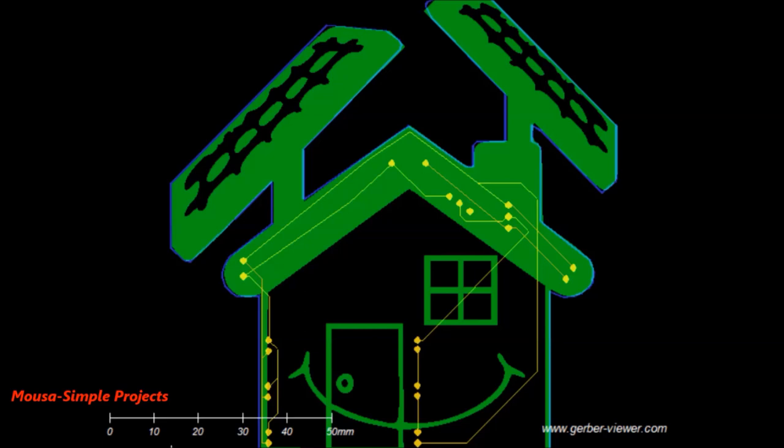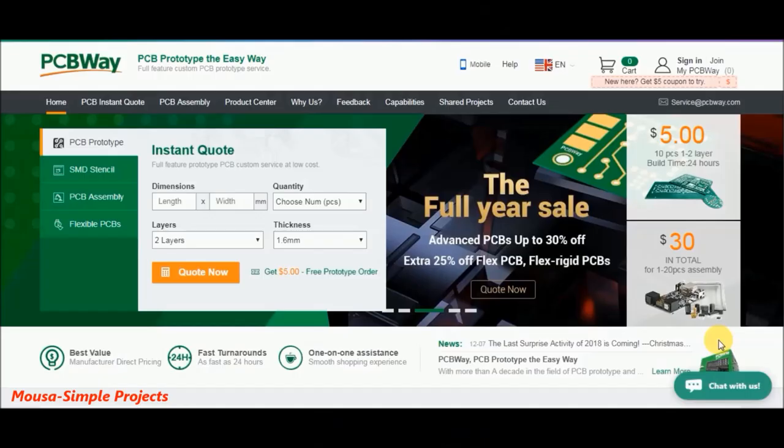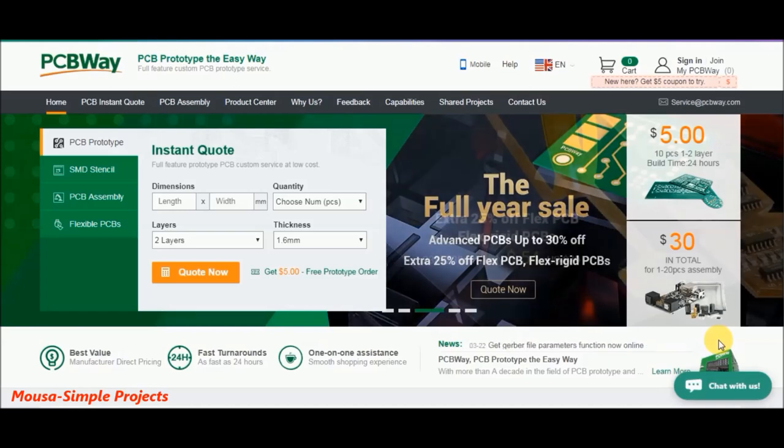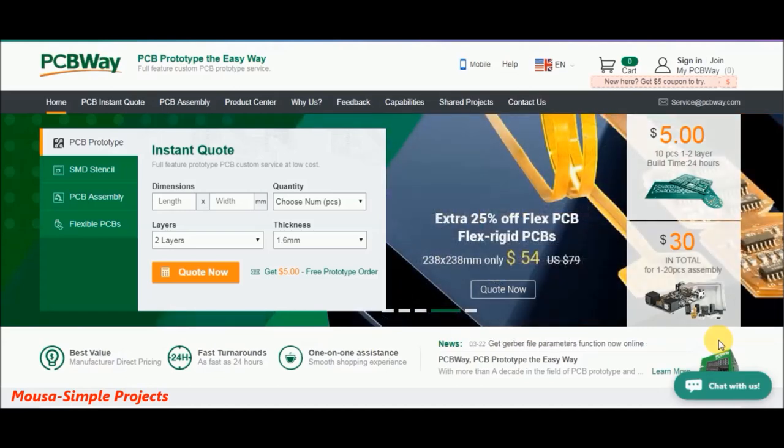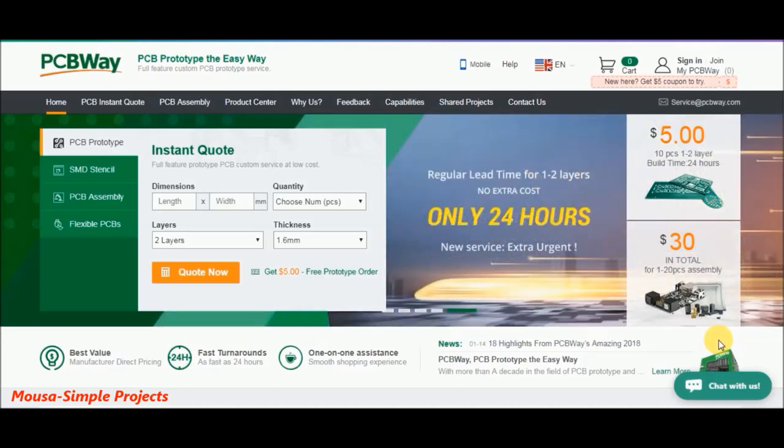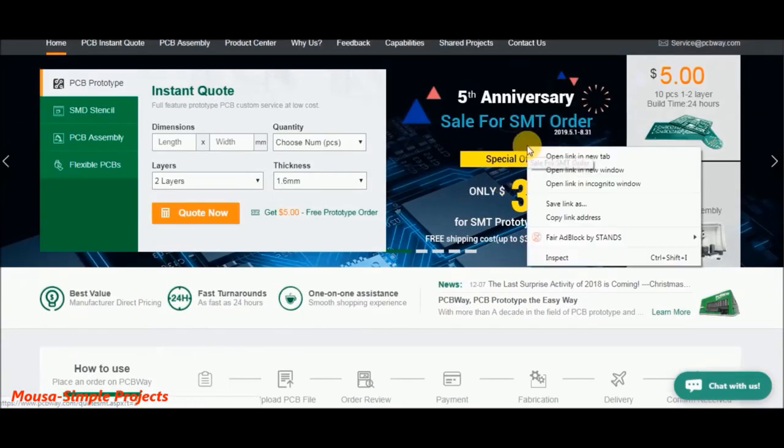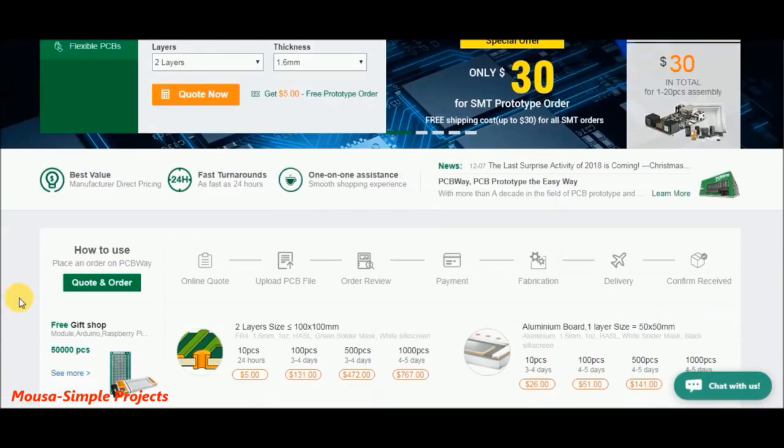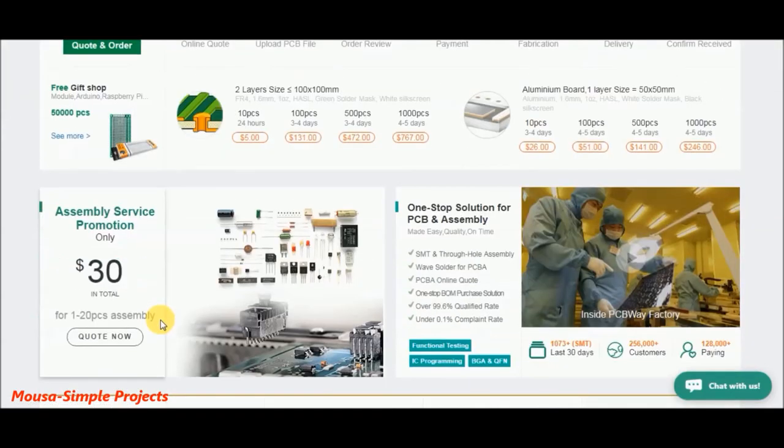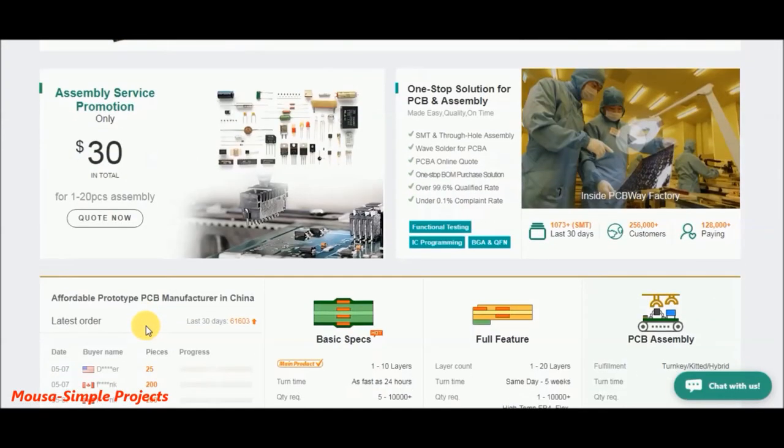And designed the PCB board in the shape of a tiny house, which is my YouTube channel logo. To make the PCB board I go to pcbway.com. PCBway is a Chinese PCB manufacturer with high quality and good prices. PCBway these days offers big discounts for SMT assembly service, which drops from $88 to only $30.